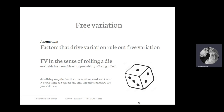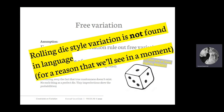These imperfections are really tiny, but they are enough to make perfectly free or perfectly random variation impossible. I'm not going to worry about the fact that all dice are at least slightly rigged. We'll agree this is as close as we can get to real, perfect, random free variation. But the point is that in language, this free variation does not exist — this rolling-die style variation is not found in language.